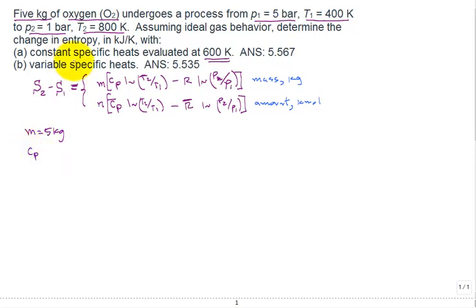We need to get the C sub P. They tell us to evaluate the constant specific heat at 600 Kelvin. What you do is you go to a particular table, that table being the A20. At table A20, at 600 Kelvin for the oxygen gas, we find 1.003 kilojoules per kilogram Kelvin. That's from table A20 for oxygen at that temperature of 600 Kelvin.